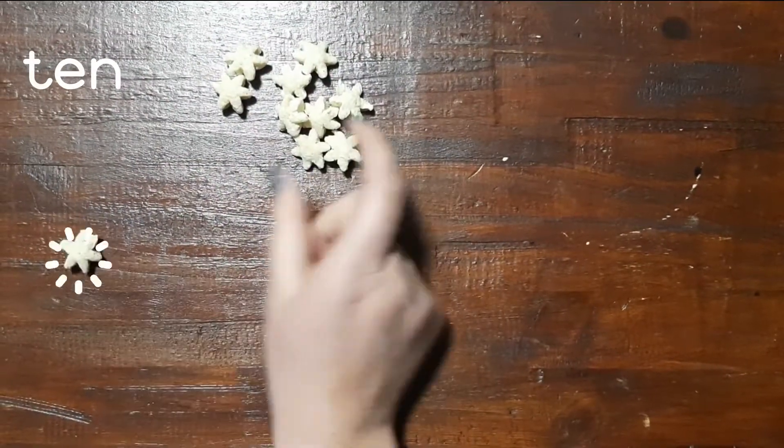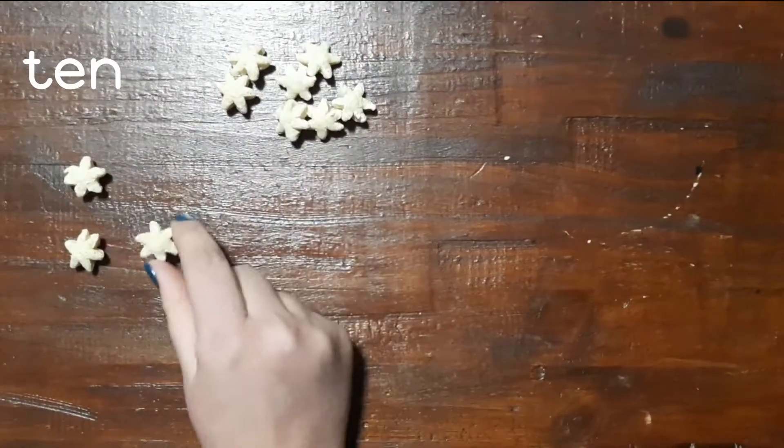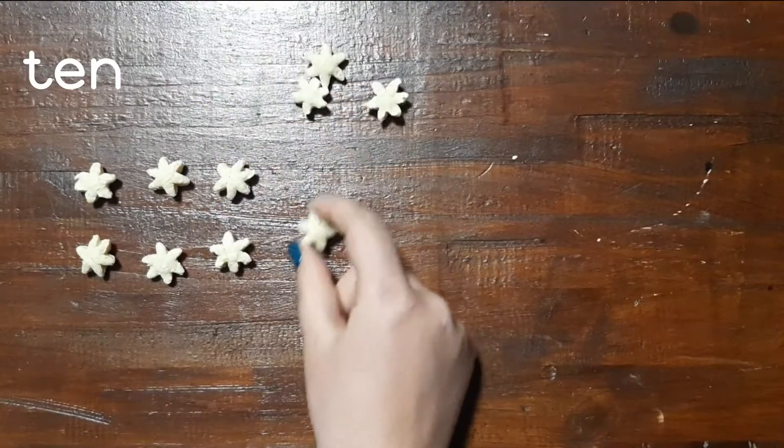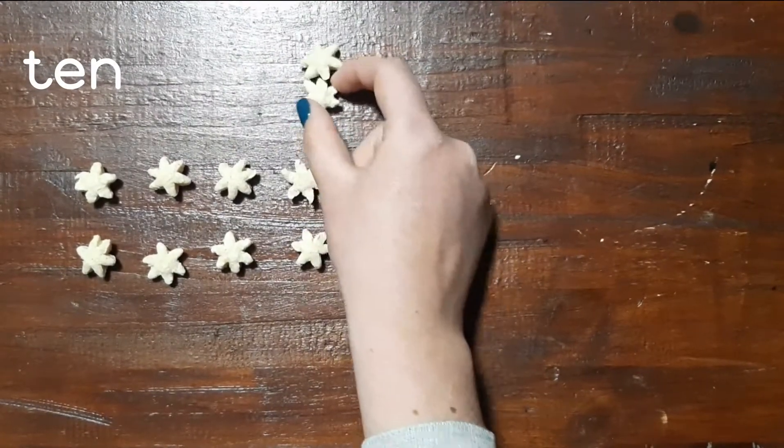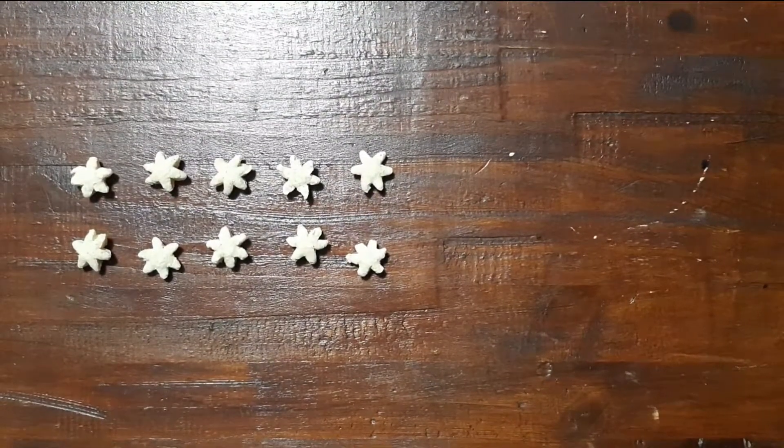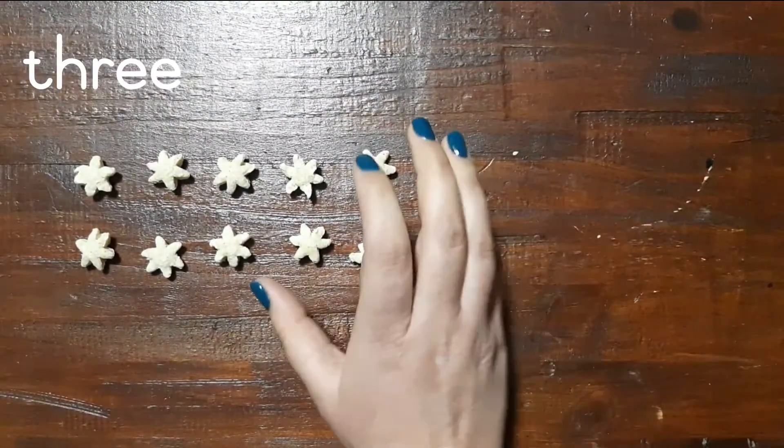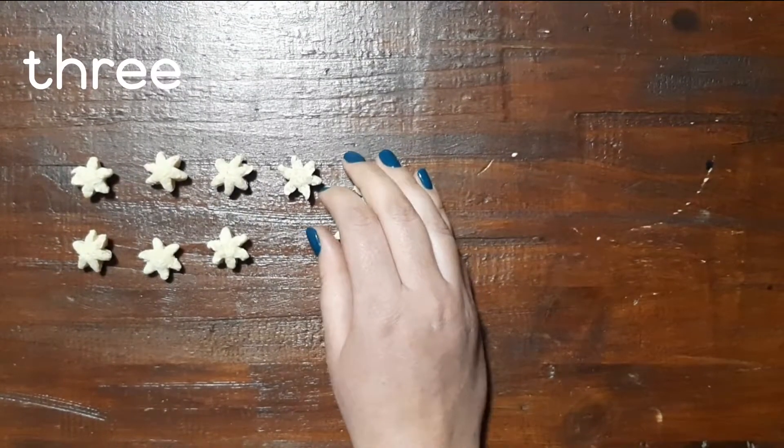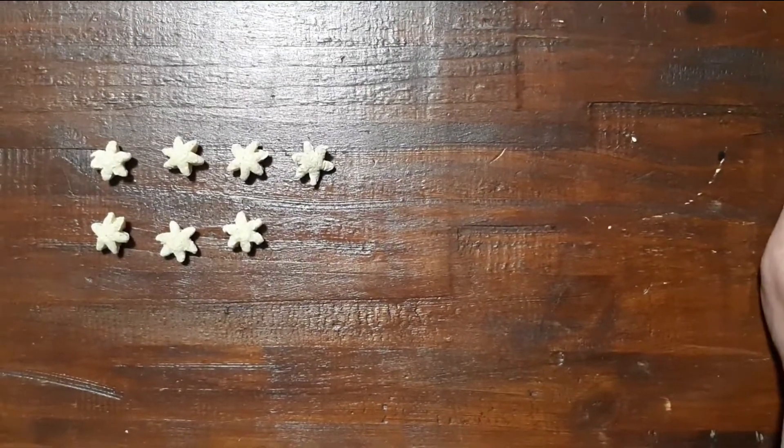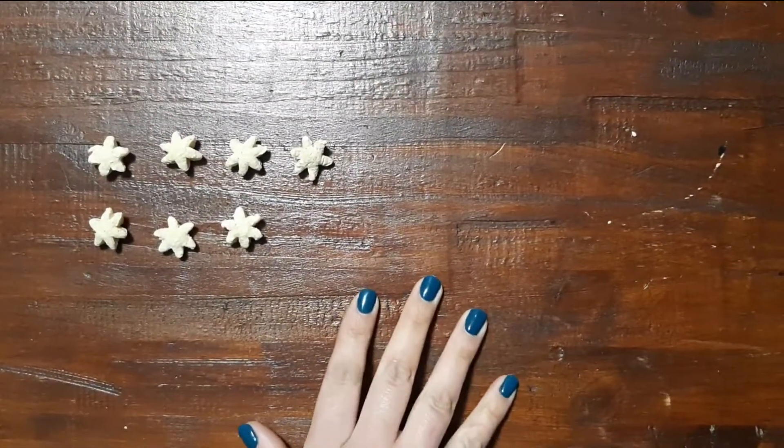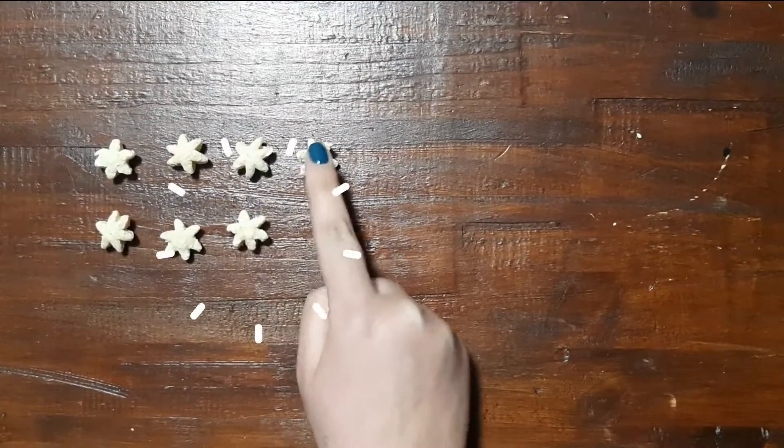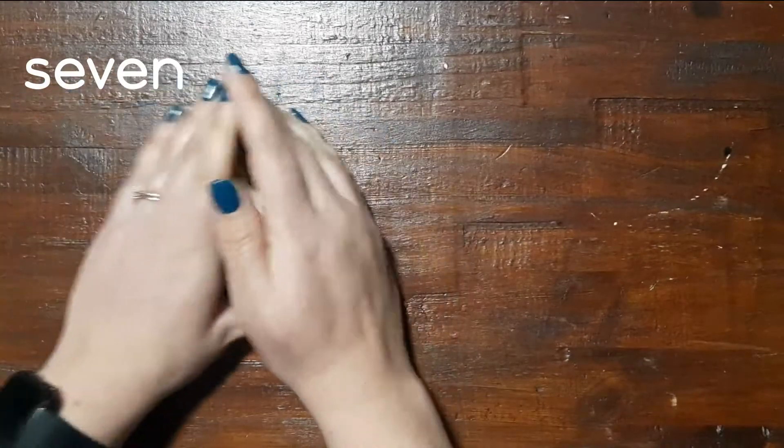I've got 10 stars. [Counts 1 through 10] But I ate 3. So I have to take 3 of them away. Let's check: 1, 2, 3. Now they're gone, they're in my tummy. Let's count how many we have left: 1, 2, 3, 4, 5, 6, 7. Very good.